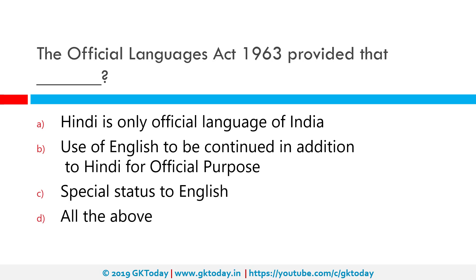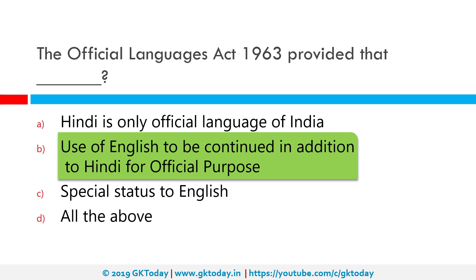The Official Languages Act 1963 provided that English be continued to be used in addition to Hindi for official purposes. English was the only language used for official purposes in British India. In Independent India, it was declared in Article 343(1) that Hindi will be the official union language. It was also mentioned that over a period of 15 years since the commencement of the Indian Constitution, Hindi will replace English as the official language.